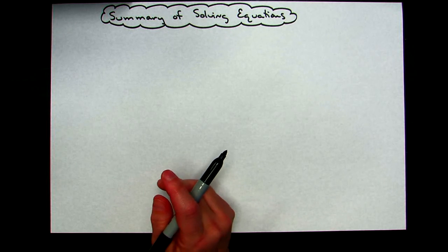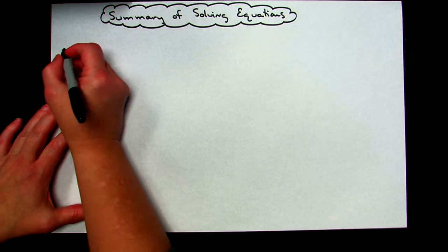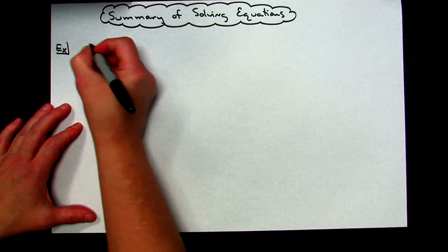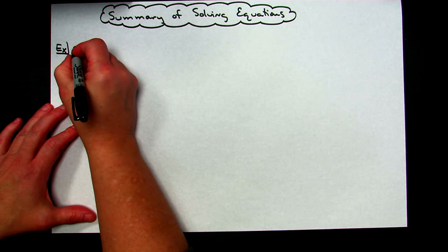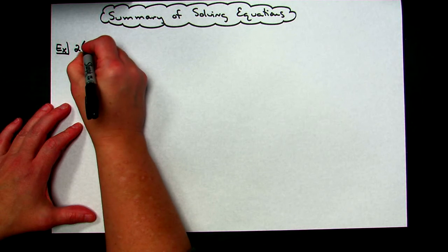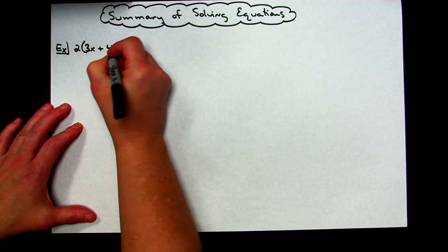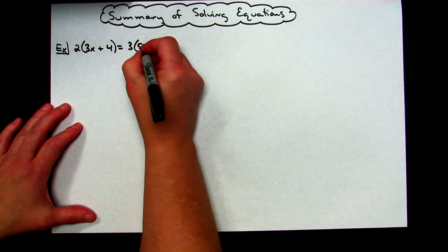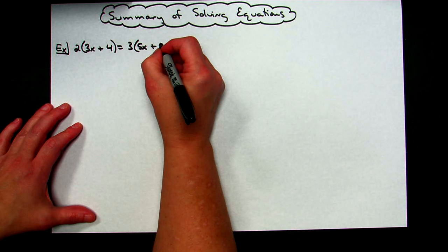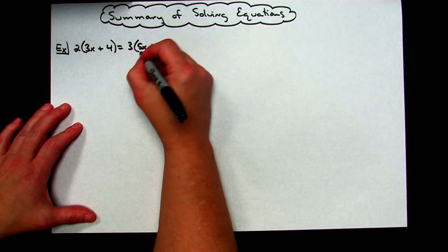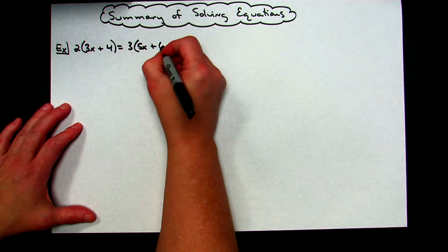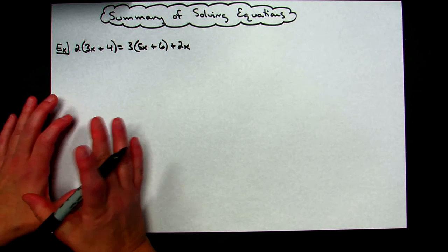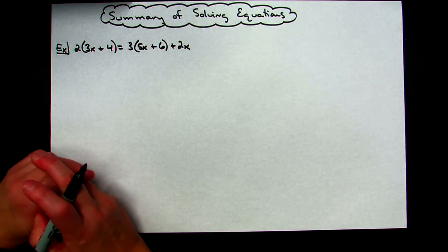So let's start out with a basic equation that you did a lot in Algebra 1 and Algebra 2. Let's suppose you had things like some distributive property and combining like terms on maybe say both the left and the right side of the equation. So let's take a look at like 2 times the quantity 3x plus 4 equals 3 times the quantity of 5x plus 6 maybe plus 2x. Alright, now like I said, I'm not going to actually take the time to work all of these out, I just want to refresh your memory on how to go about solving equations.